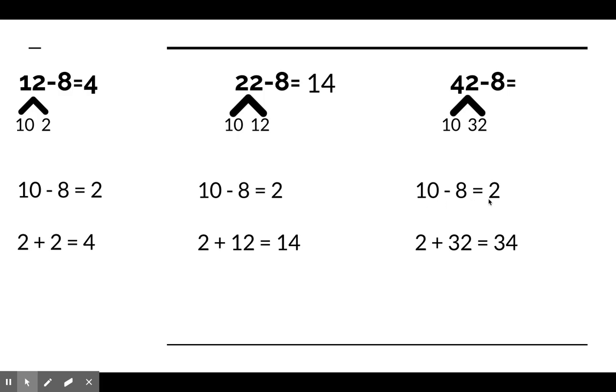10 subtract 8 equals 2. Wow! That was definitely the same each time. But, we can't stop there, because this 2 has to be added to the other remaining part, which was 32. So, 2 plus 32 equals 34. Our answer was 34.